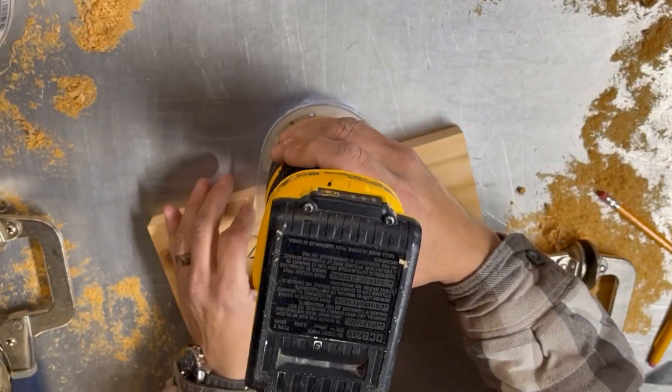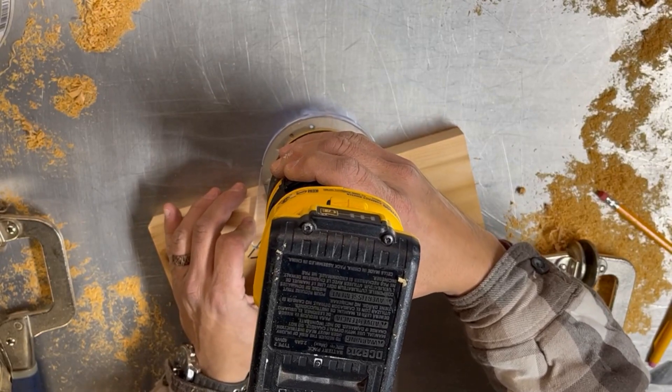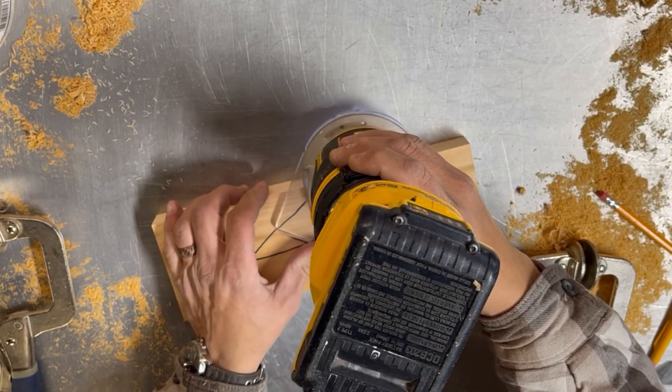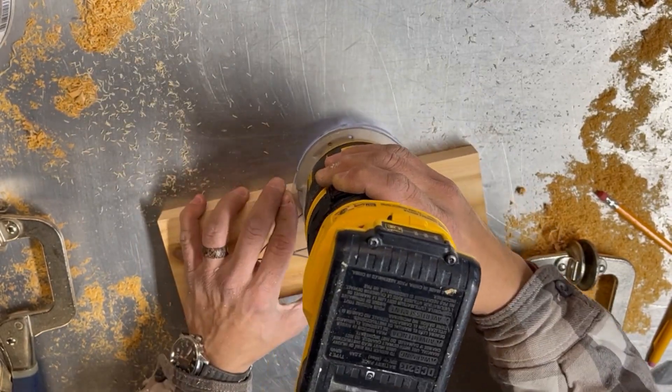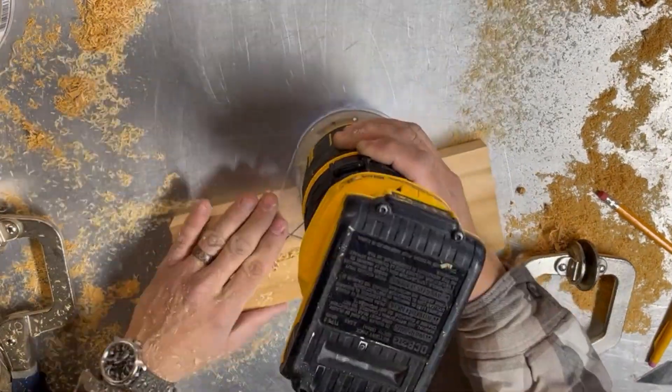Next I set my router depth to just a little bit thicker than the blade of my knife and then I cut this part which is the most crucial area because it's the only area that you're actually going to see from above when you're looking at the knife block.